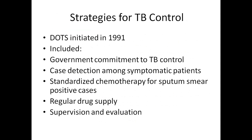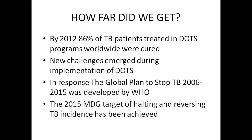The strategies for TB control: After decades of relative neglect, global efforts to control TB were reinvigorated in 1991. The DOTS strategy was developed by WHO, initiated in 1991, and included government commitment to TB control, case detection among symptomatic patients, standardized chemotherapy for sputum smear positive cases, regular drug supply, and supervision and evaluation. By 2012, 86 percent of TB patients treated in the DOTS program worldwide were cured.